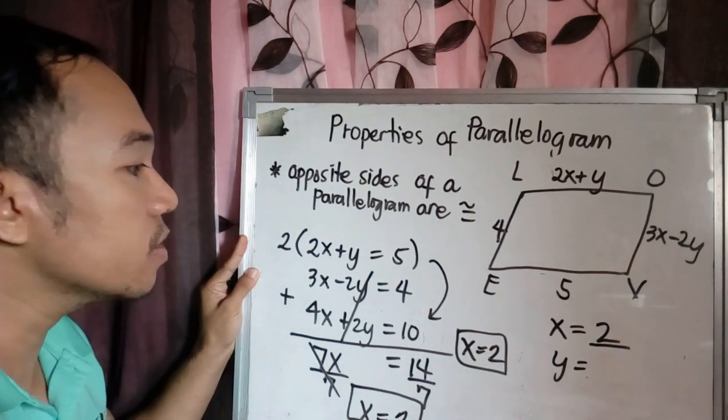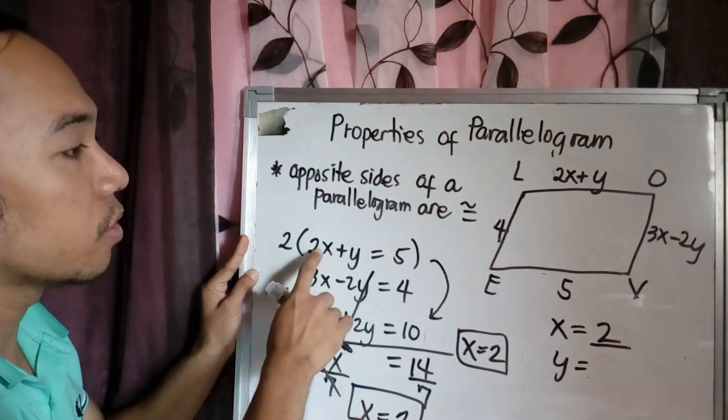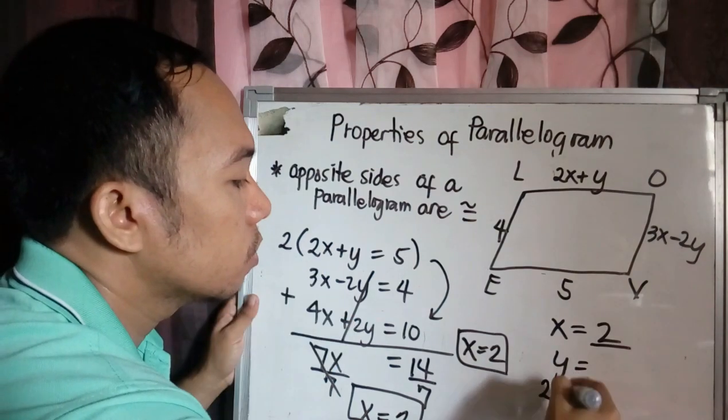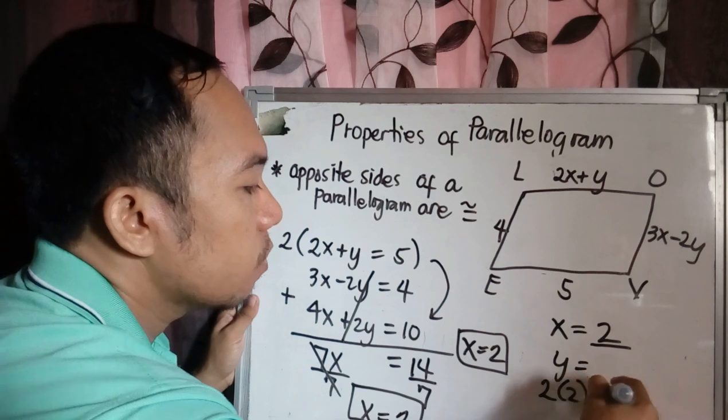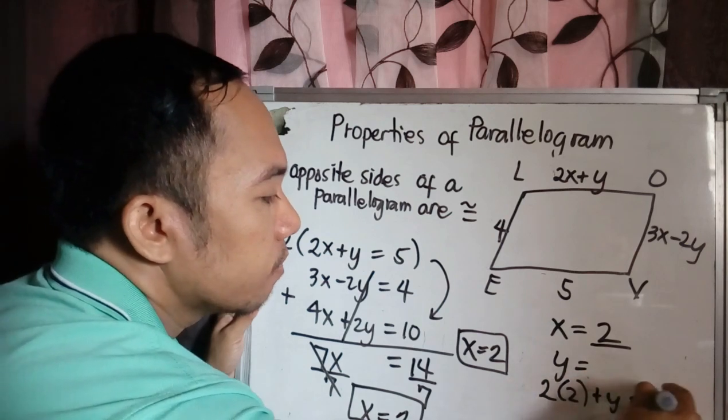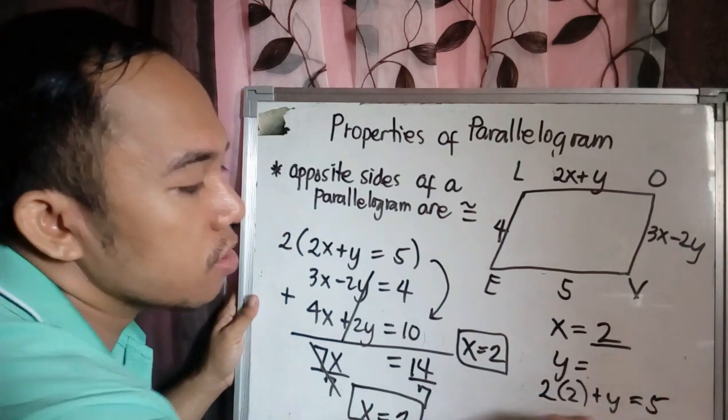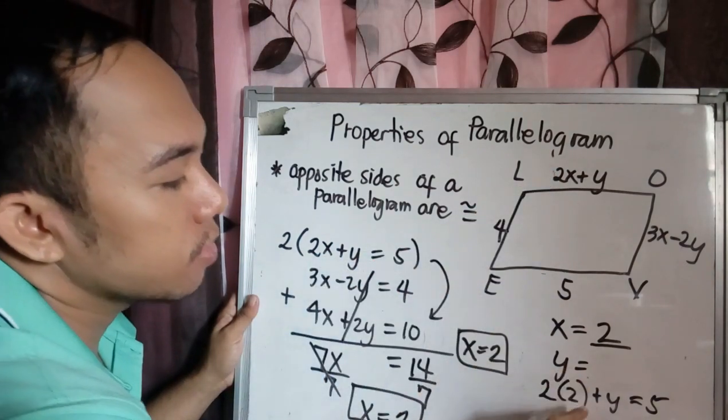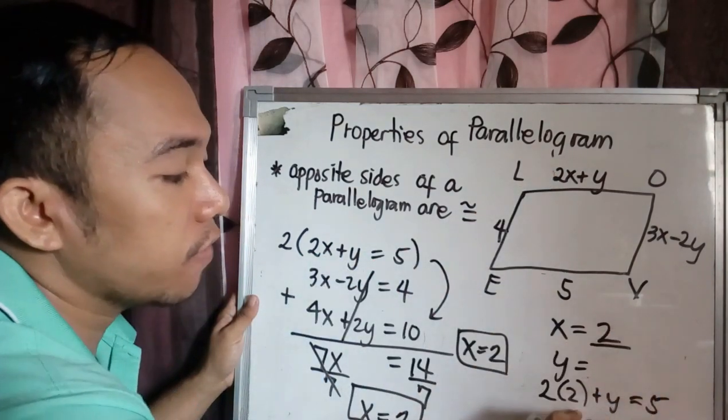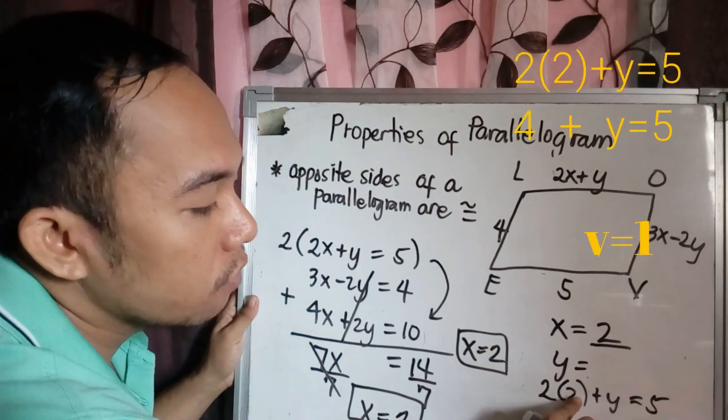And to solve for Y, we will substitute here. 2 times 2 plus Y equals 5. Where did I get this equation? From this equation, 2X plus Y equals 5. So I just substituted your value of X. So 2 times 2 is 4.